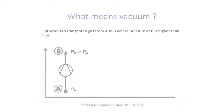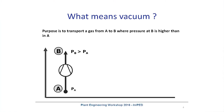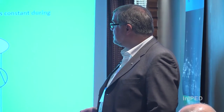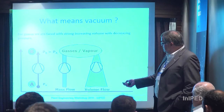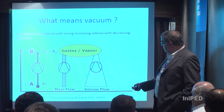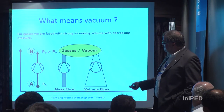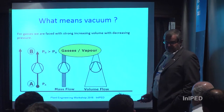What does vacuum mean? In principle, it's the same as with centrifugal pumps — you bring a gas from point A to point B, where the pressure in B is higher than in A. On liquids, we have a constant mass flow and a constant volume flow, because liquids are not compressible. When we talk about gases, the mass flow is also constant, but the volume flow is decreasing with the rising of pressure.